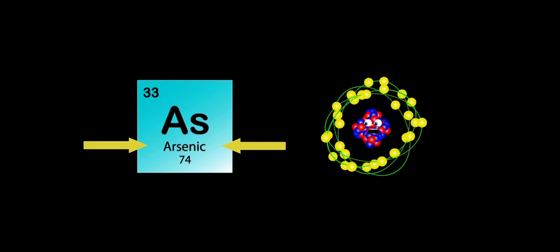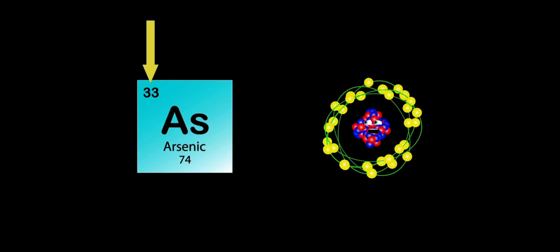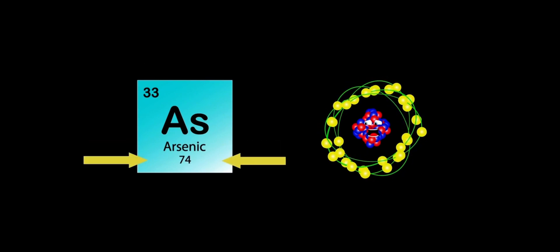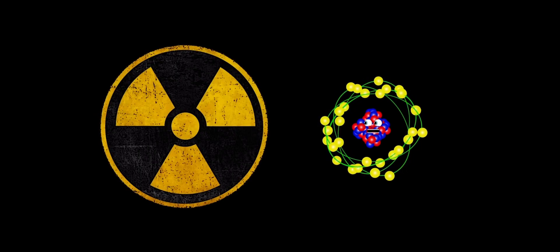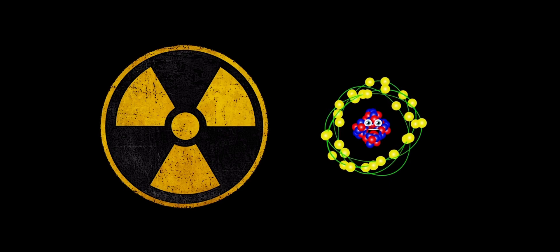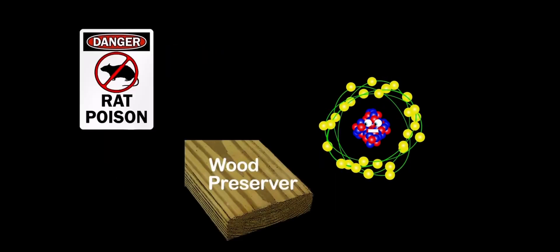My name is Arsenic, my atomic number is 33, my atomic mass is 74, As is the symbol you see. Due to my toxicity, my compounds are often used in insecticides and wood preservation, that is true.